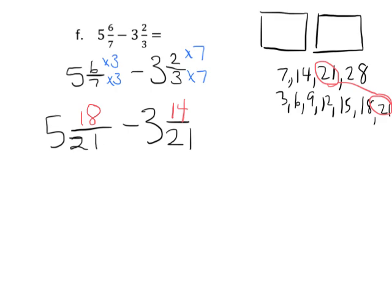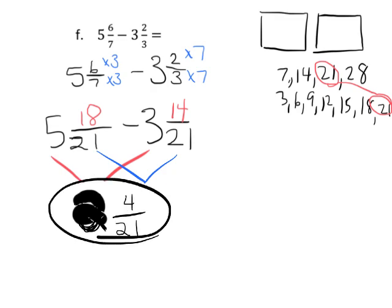So now we can subtract. 5 minus 3 gives us, 5 minus 3 does not give us 5. 5 minus 3 gives us 2. 2, right there. And then, 18 21sts minus 14 21sts gives us 4 21sts. So our answer is 2 and 4 21ths.